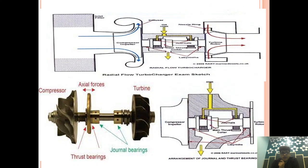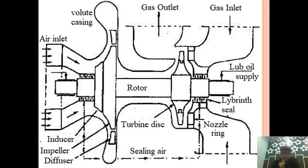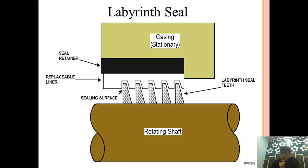This gives a clear picture: one labyrinth seal is provided on the compressor side and one on the turbine side. The bearing visible here sits between both seals. To prevent contamination of air coming from the compressor reaching this bearing, the labyrinth is provided on the compressor side. To prevent contamination of exhaust gas reaching this bearing, the labyrinth is provided on the turbine side. This is how labyrinth seals are provided in a turbocharger.